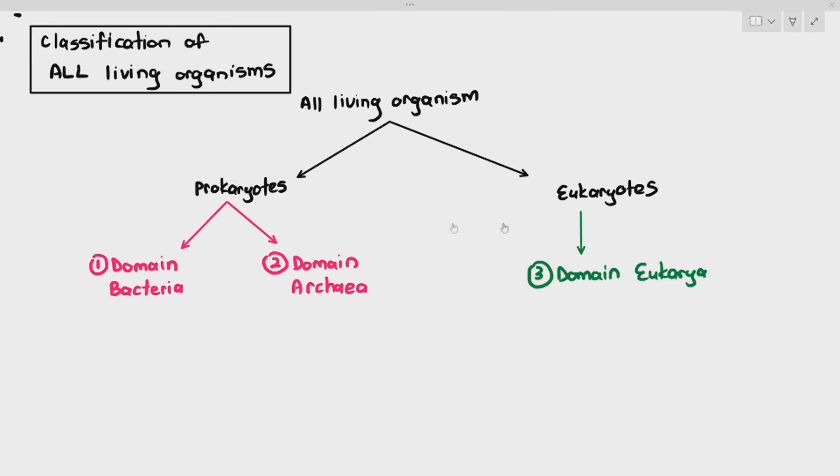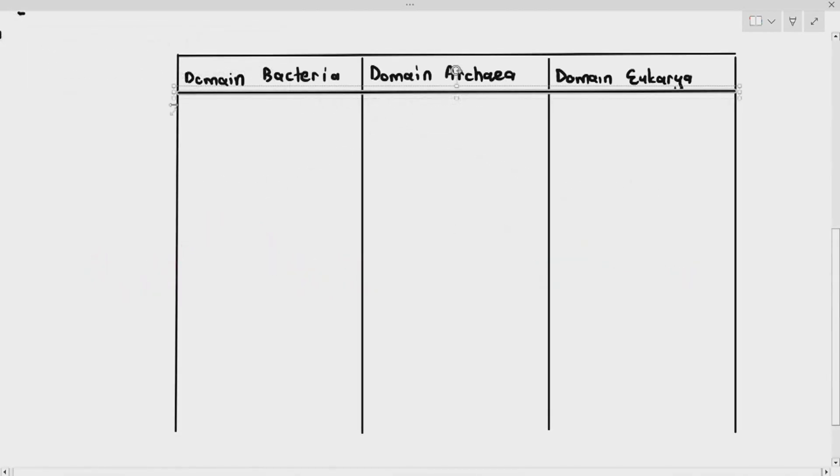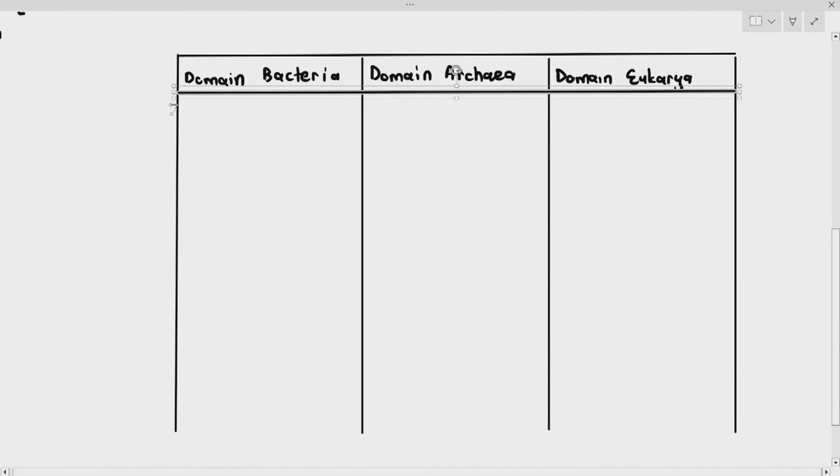So we are going to look at all these three domains and compare their similarities and differences. I'm going to create a table over here. Domain bacteria, domain archaea and domain eukarya. Presence of nucleus, I've mentioned it. Bacteria do not have nucleus. Archaea also do not have nucleus. But eukarya, any organisms that fall under this domain will have nucleus in their cells.